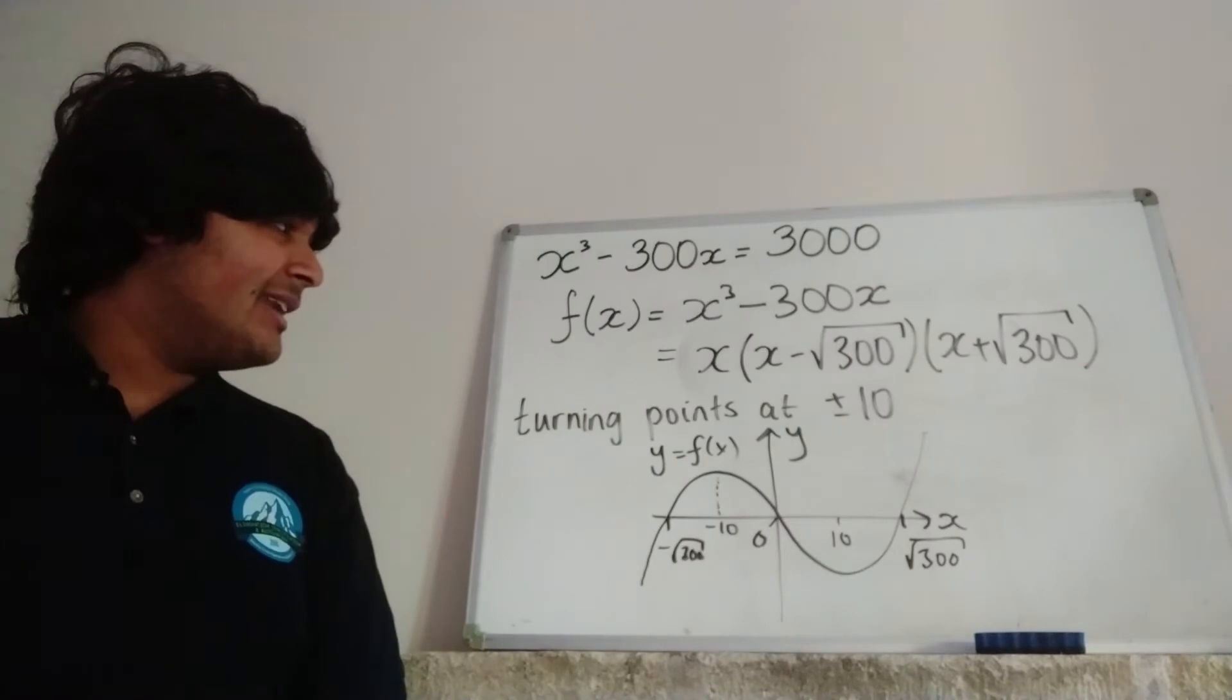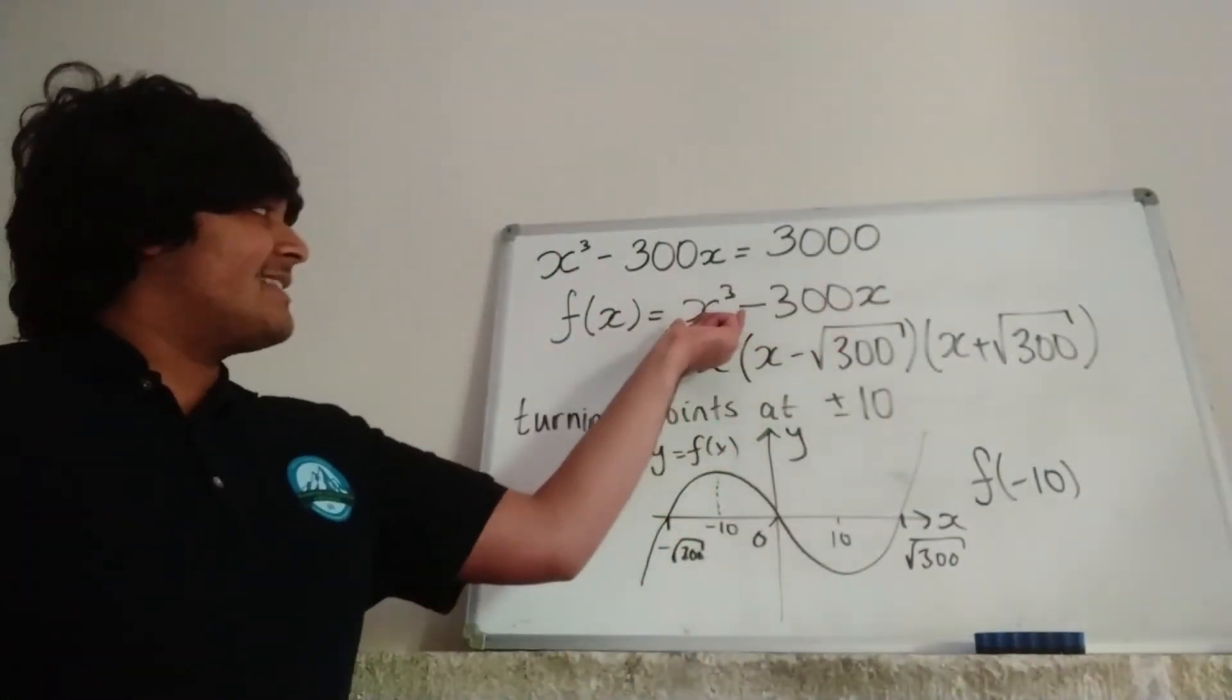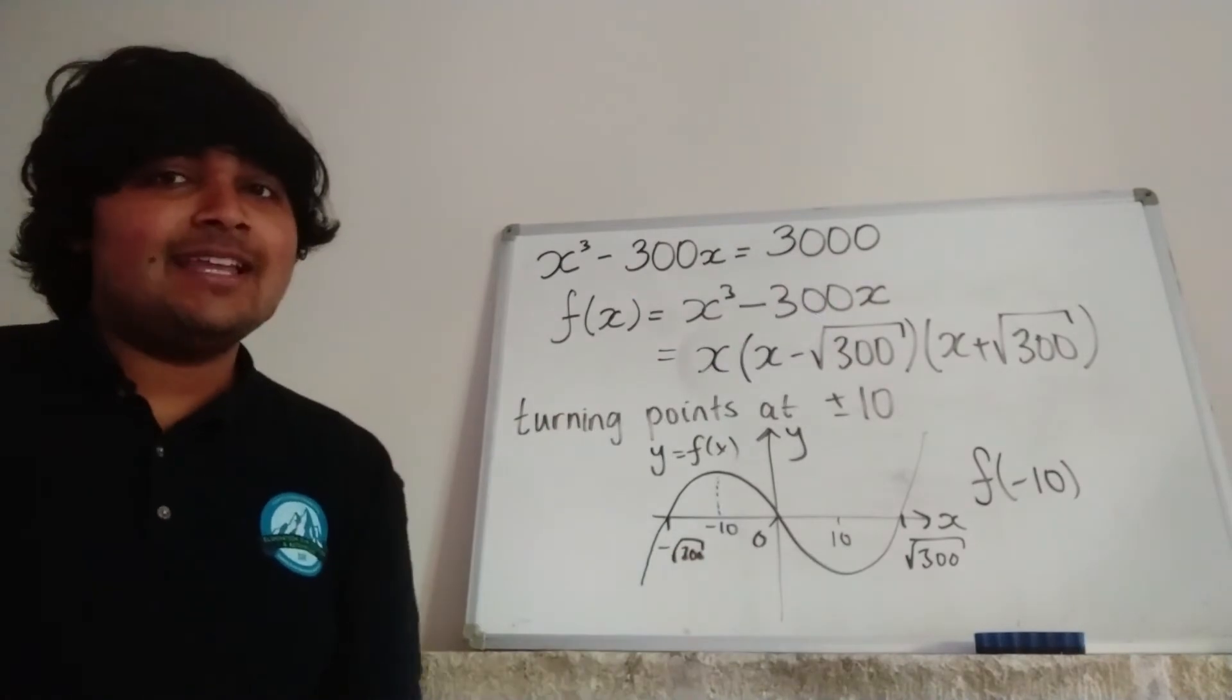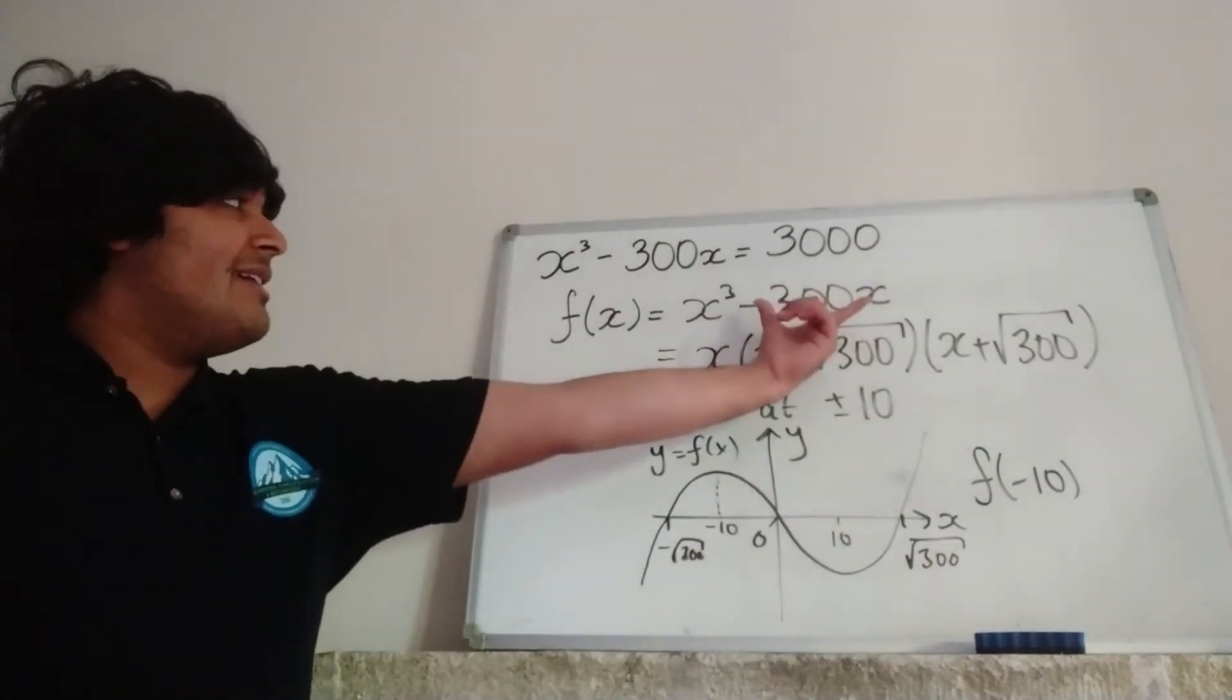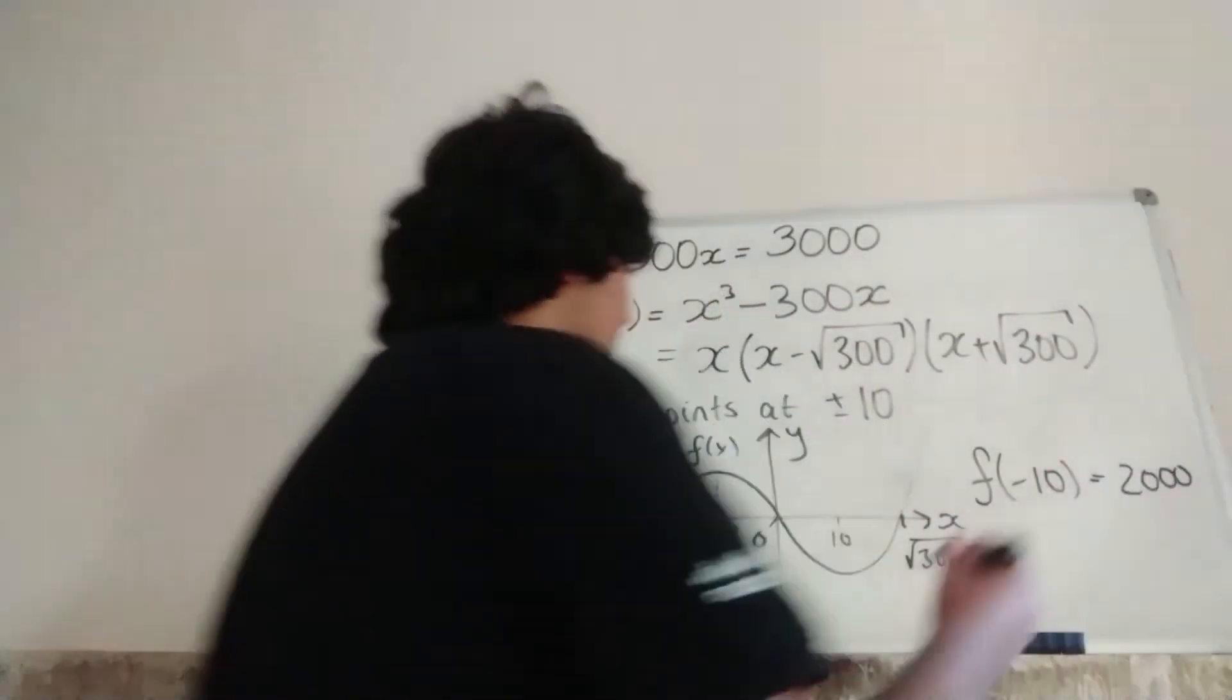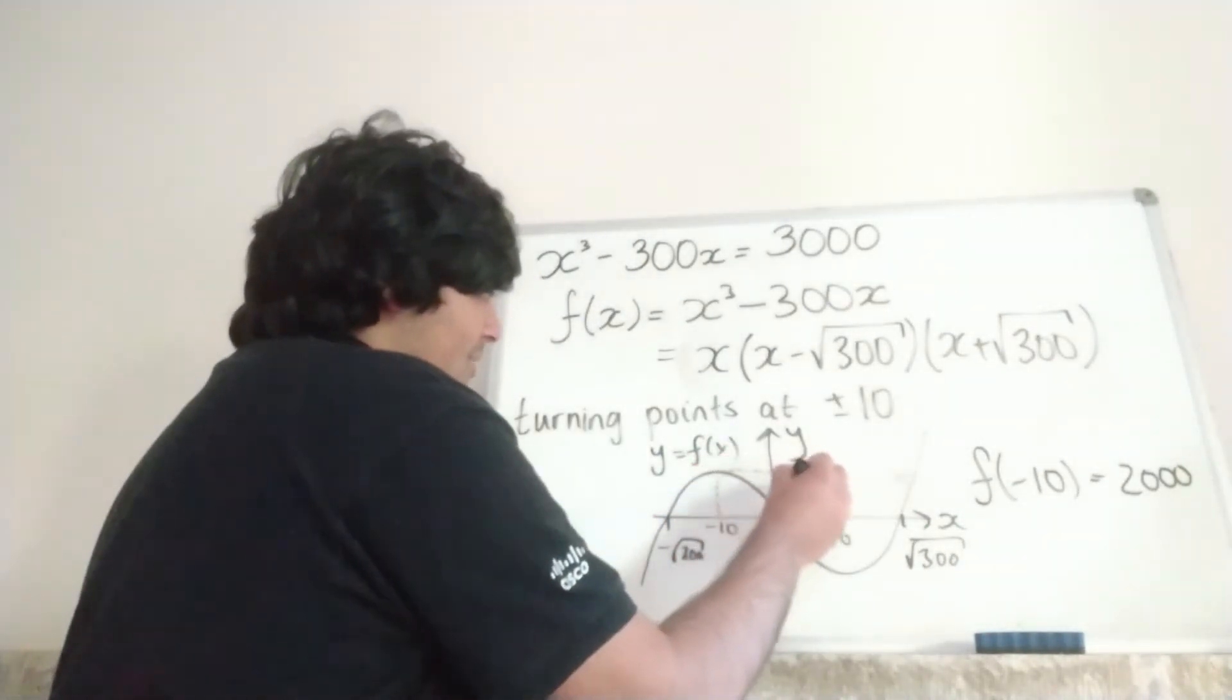Well, if you plug in minus 10, i.e. compute f of minus 10, we're just plugging it into this guy here. We get minus 10 cubed, which is just minus 1,000, then minus 300 times minus 10. Minus 300 times minus 10 is positive 3,000. So here it's 3,000 minus 1,000, which is 2,000. So f of minus 10 is 2,000, which tells us at this point here, corresponds to 2,000.